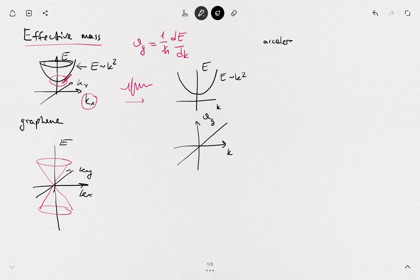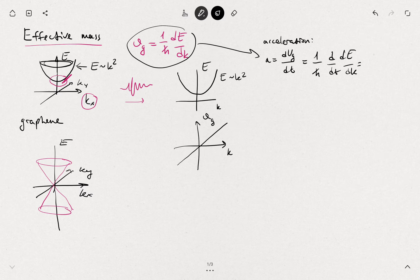And then we can introduce the acceleration associated with this one which we define as dVg/dt. You can take a derivative, so 1 over ℏ d/dt of dE/dk. You can then rewrite this one as 1 over ℏ times d²E/dk² times dk/dt.